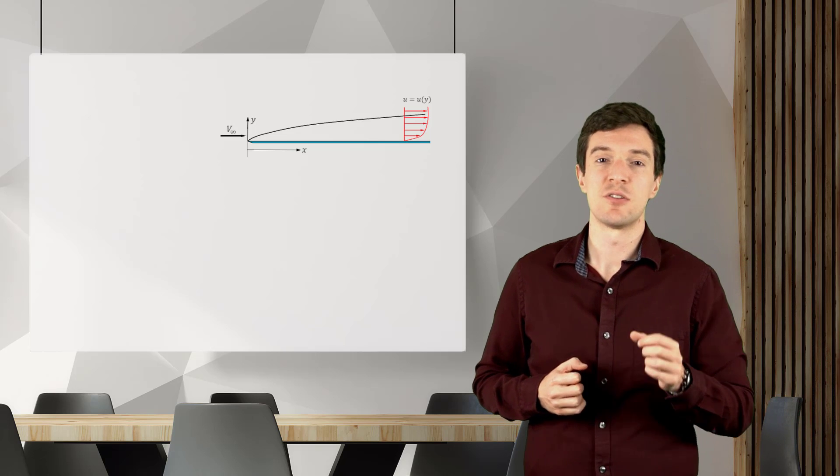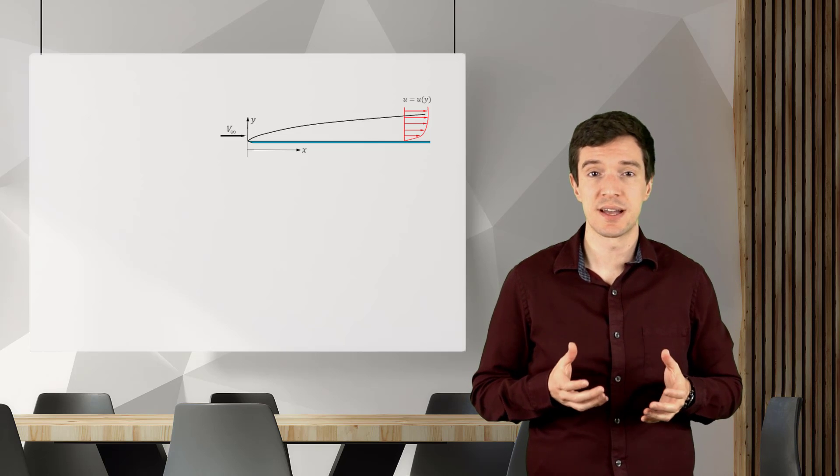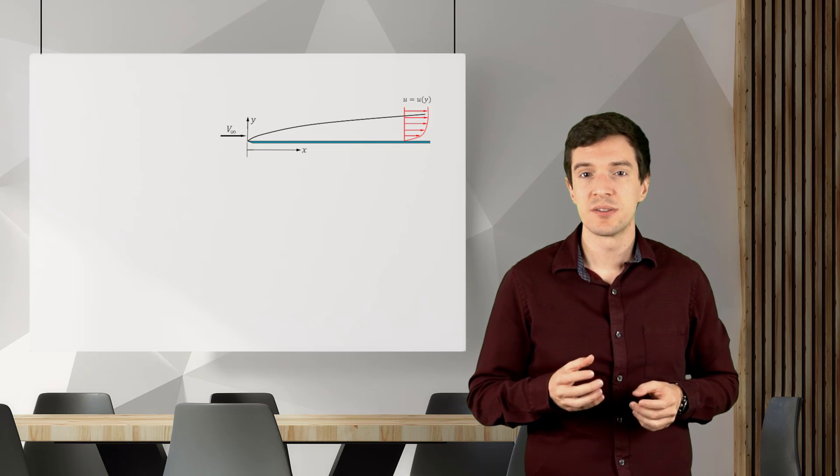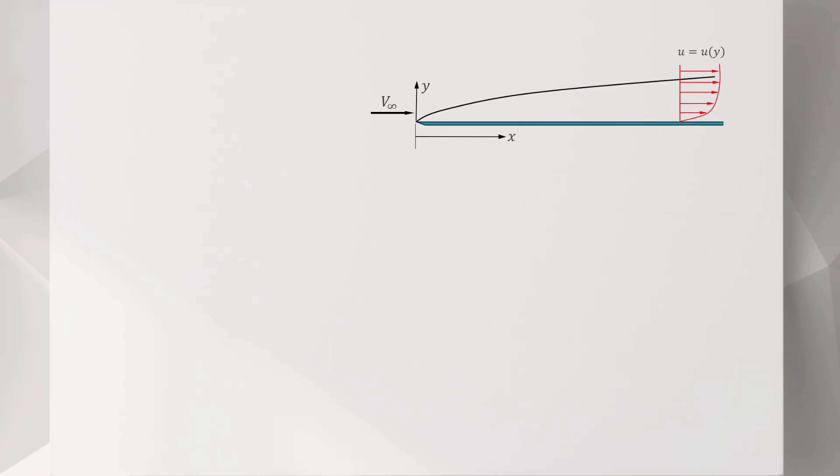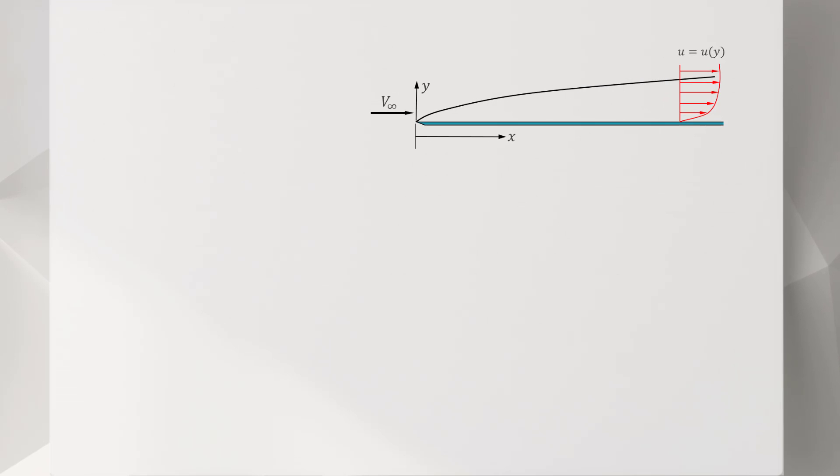From the integral analysis that we discussed before, we found out that some terms are more significant than others for boundary layers. Let's take a look at this numerical result of a boundary layer over a flat plate to better connect what we found with the physical phenomena.